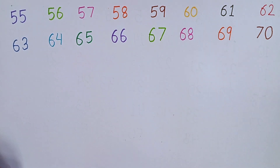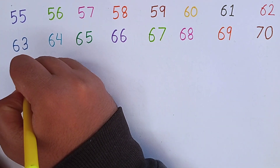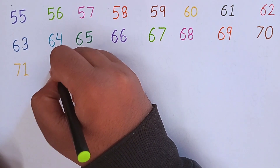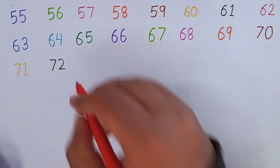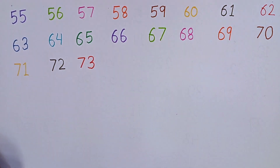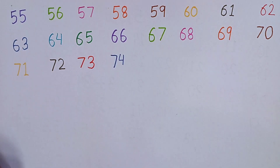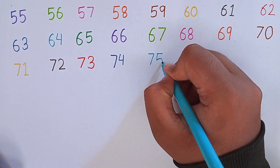Again, repeat with me: 63, 64, 65, 66, 67, 68, 69, 70. Now I am going to write 71. This is 71. After 71, I am writing 72. This is 72. Now I am writing 73. 7, 3 — 73. After 73, I am going to write 74. 7, 4 — 74. After 74, the next number will be 75. 7, 5 — 75.